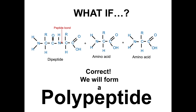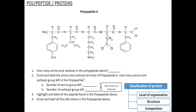It is quite simple to recognize a polypeptide. The backbone is made up of repeating NCC, NCC, NCC, whereby each of the NCC corresponds to one amino acid residue. Now take a look at polypeptide A. You can pause this video and analyze the diagram before we start answering the questions.